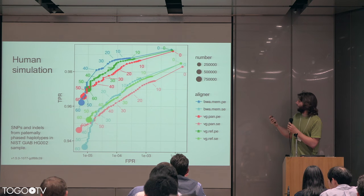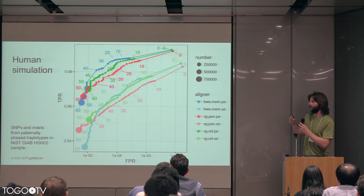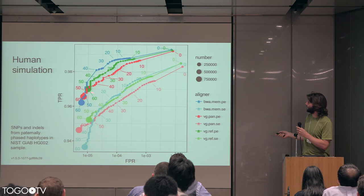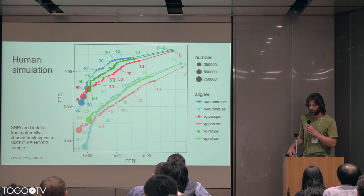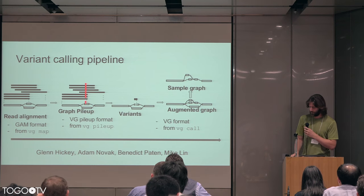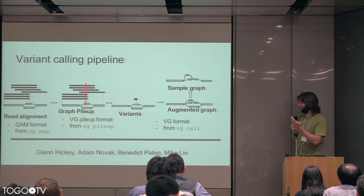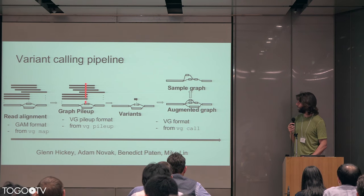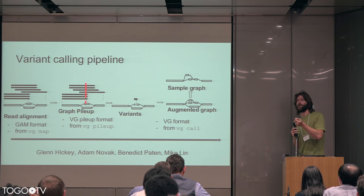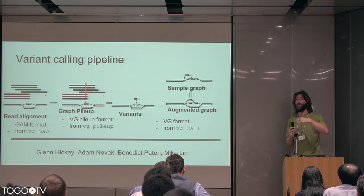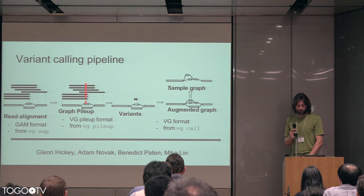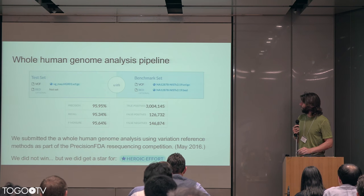This is the same idea for human. Here we have a sample not part of the pan genome where we know the phase of the two haplotypes. We simulate from them and see basically the same effect as with the yeast. So what else can we do? We see that performance is sufficient to do things like variant calling. The way variant calling works is you have read alignments, you make a pileup that shows where there are differences, you put those pileup variants into the graph to augment it, and then project back to VCF.